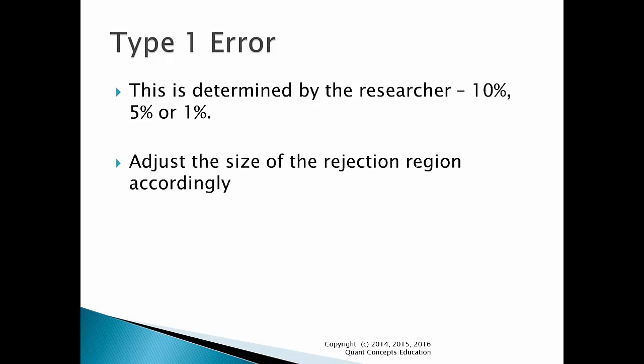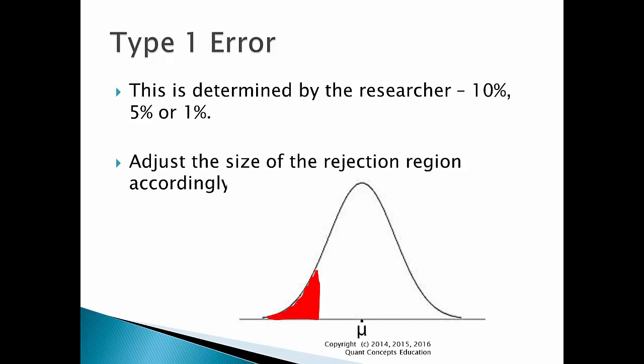We can adjust the size of the rejection region. For example, if we don't really mind committing a type 1 error with Sam — perhaps you never really liked him anyway — your rejection region may take up the bottom 10% of the distribution. If you would feel guilty accusing Sam of being a liar when he's telling the truth — perhaps Sam's a pretty good mate — you might use a smaller rejection region taking up the bottom 5% of the distribution. Finally, if you need to really minimize the occurrence of a type 1 error — say Sam's a very sensitive character who might injure you severely if wrongly accused — you should use an even smaller rejection region taking up only 1% of the area underneath the curve. So the size of the rejection region is determined by the person conducting the test.